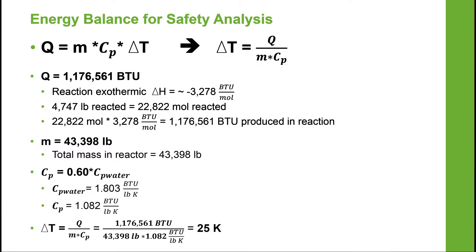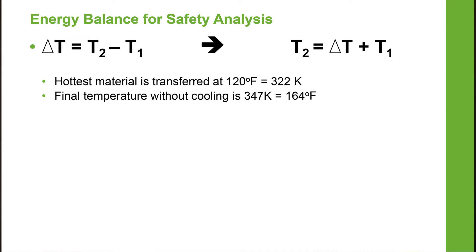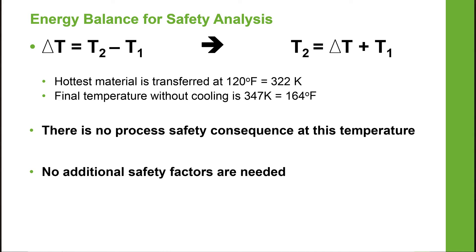With those values, I was able to determine that I would have a change in temperature of 25 degrees Kelvin. I knew that the hottest material that would be transferred into the reactor was going to be at 120 degrees Fahrenheit. I used this as the temperature in the reactor as a worst case scenario. Given that number and the delta T that I calculated on the previous slide, I was able to determine that the final temperature in the reactor would be 164 degrees Fahrenheit.